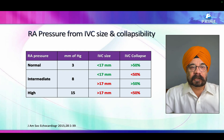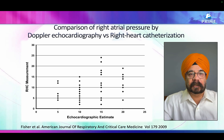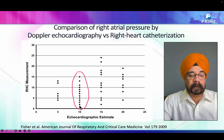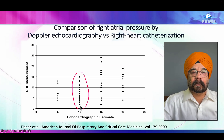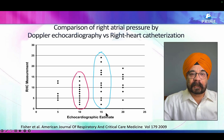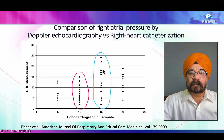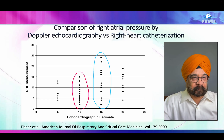The RA pressure component was based on IVC collapsibility and IVC diameter, but when compared with catheterization we had a very different experience. Some patients where we said RA pressure was 10 had a true RA pressure less than 3, and others had RA pressure more than 15. When the echo-estimated RA pressure was 15, the true value could range from less than 5 to more than 20. So there was a significant problem with calculation of RA pressure — that was error number one.